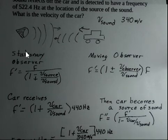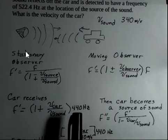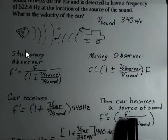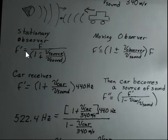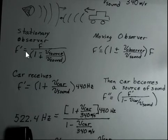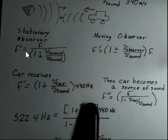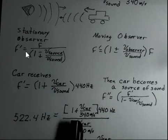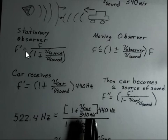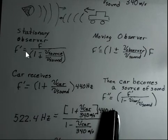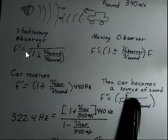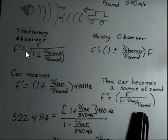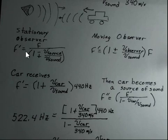We're going to put these together by substituting the f prime expression into the second equation. So the frequency detected, reflected from the car — given as 522.4 hertz — equals (1 plus v_car divided by 340) times 440, all divided by (1 minus v_car divided by 340 meters per second). My first step is to divide both sides by 440 hertz, so the hertz units cancel. I also multiply both sides by the denominator, the quantity (1 minus v_car divided by 340).